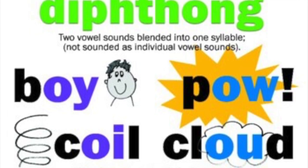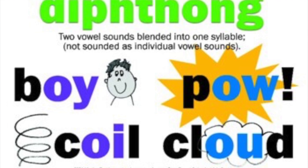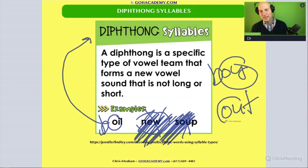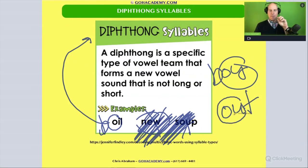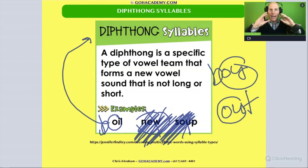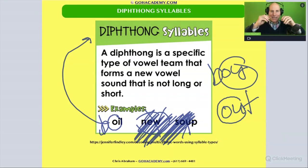Another diphthong is 'ow,' as in 'out.' Touch your jaw, throat, and tongue and say 'ow.' A diphthong has two sounds — there's movement in your mouth, your tongue, and your throat as you move from the initial sound to the second sound.